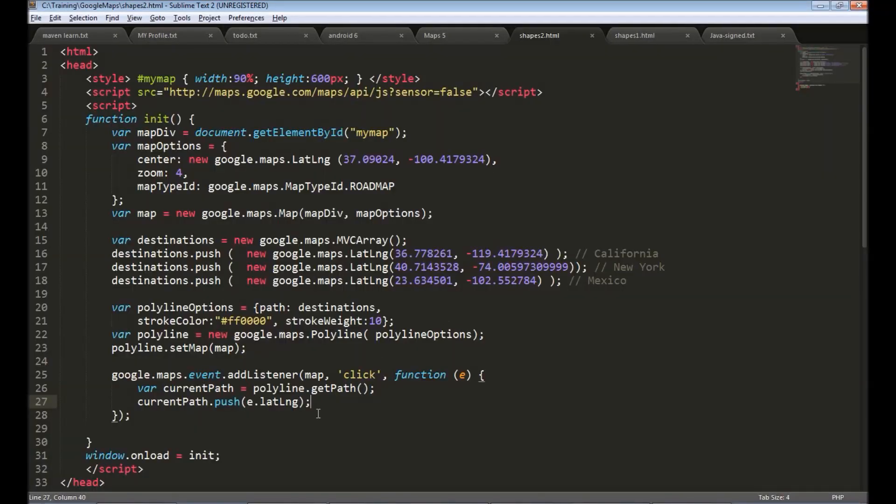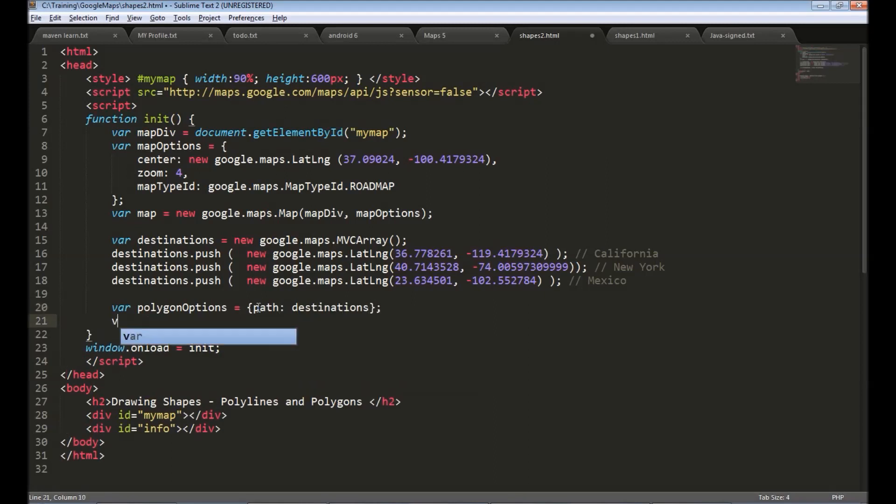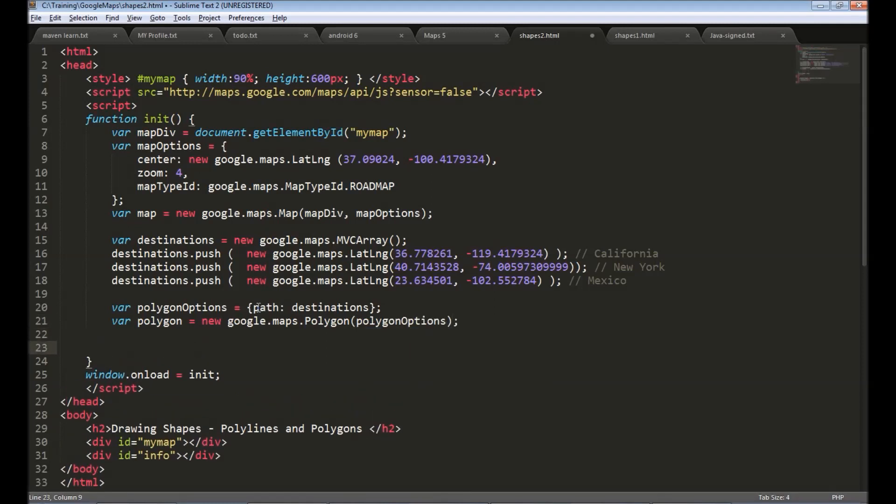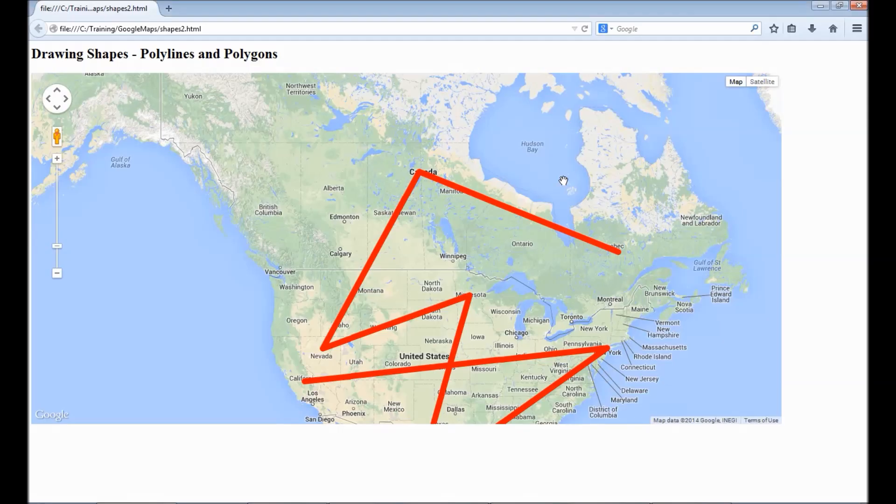I will remove this. We will still use our array. So let's create polygon options equals to path is the same you specify the array. Next we create polygon object new google.maps.polygon and pass the options and let's set the map to this object set map map. Now let's save and reload the page.